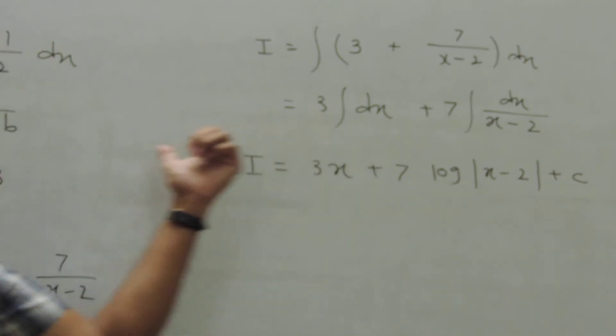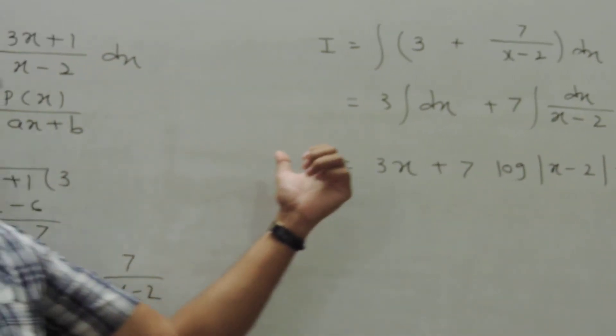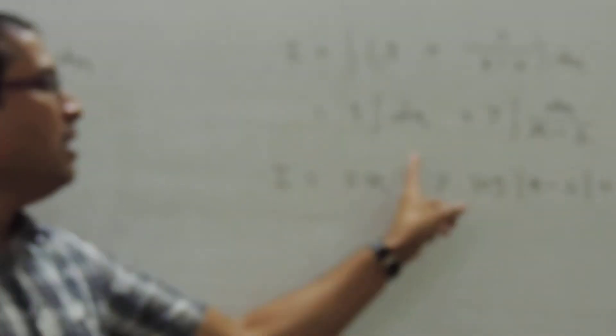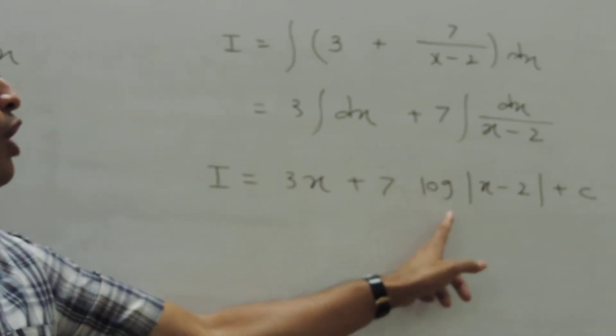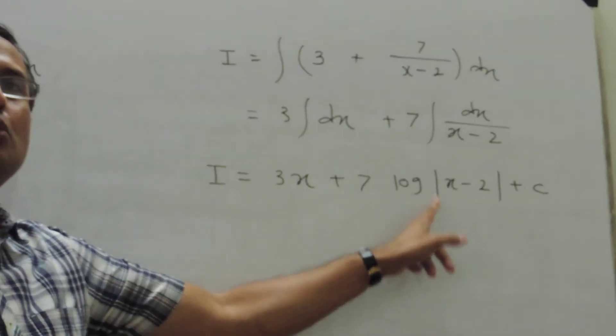Integral 3x plus 1 upon x minus 2 is 3x plus 7 into log of mod of x minus 2 plus c.